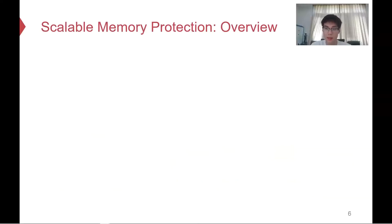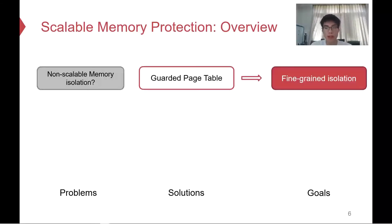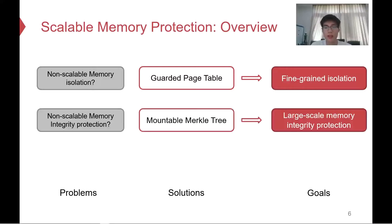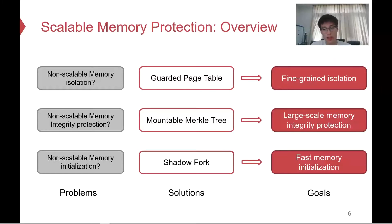In this paper, we propose three new technologies to achieve scalable memory provisioning. To address non-scalable memory isolation, we propose the Guardian Page Table and realize fine-grained memory isolation. To address non-scalable memory integrity caching, we propose the Mountable Merkle Chain and scale the protected memory size. To address non-scalable memory initialization, we propose Shadow Fork to boost the enclave setup. We will explain each problem and the corresponding solution.